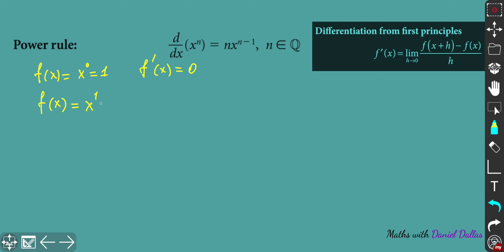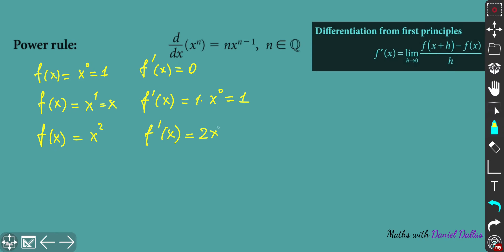Let's say f(x) equals x to the power one — in other words, just x. If you take f prime from that, you'll get one times x to the power zero, which is just one. You might notice that from differentiation from first principles. If you have f(x) equals x squared, you'll notice again from first principles that it's two x to the power one — just two x. And for x cubed, the derivative is three x squared.